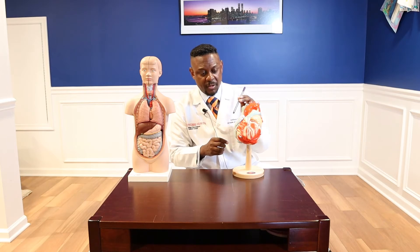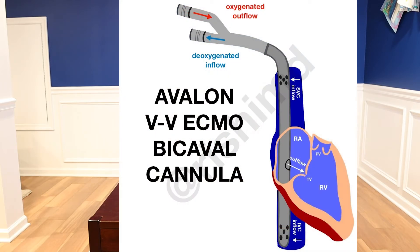When we're putting someone on venous-venous ECMO for respiratory failure, one way we can do it is to take a single cannula and place it from the superior vena cava into the right atrium through into the inferior vena cava. This single cannula has two lumens, which allows us to add oxygenated blood to the body and remove unoxygenated blood, taking it to the circuit where oxygen can be added to it. That's the most common way patients are placed on venous-venous ECMO.